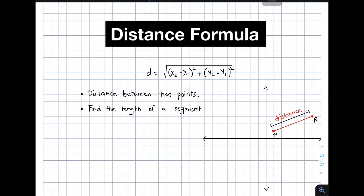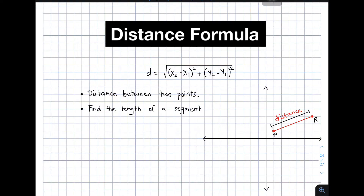This is the formula we're going to use today in our discussion. We have d is equal to the square root of the quantity of x sub 2 minus x sub 1, raised to 2, plus the quantity of y sub 2 minus y sub 1, raised to 2. When we talk about distance formula, we're using this formula in finding the distance between 2 points.